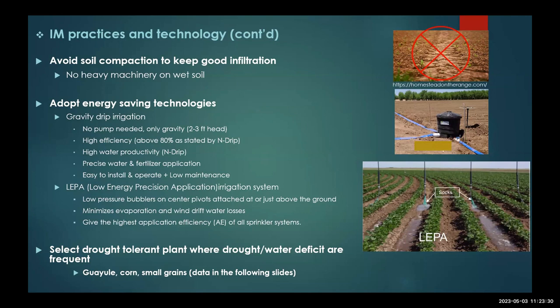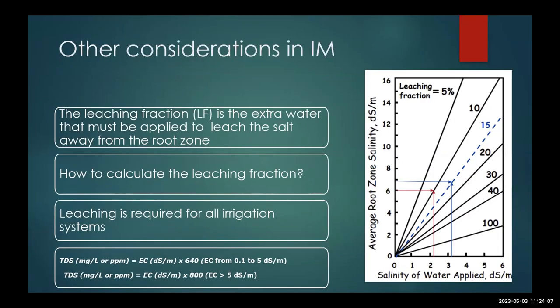For sprinkler systems used for alfalfa and other crops — one farmer told me he applies about five acre-feet per year for alfalfa, which is a very good number, since the typical is around six. He's getting the same yield as others just by using a more efficient system like center pivot. We should also look for crops that may save water. Some crops have tolerance to water stress — corn, for example, I'll show data indicating it can tolerate some stress.